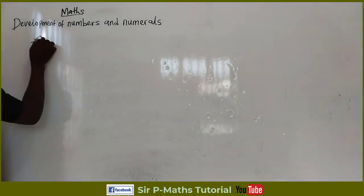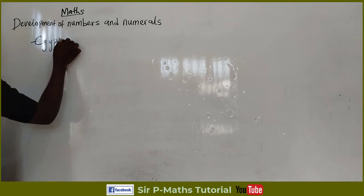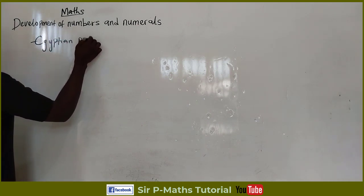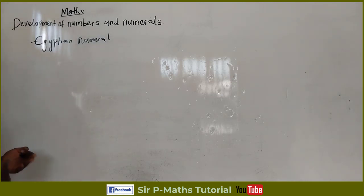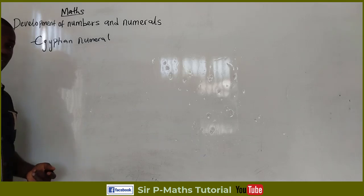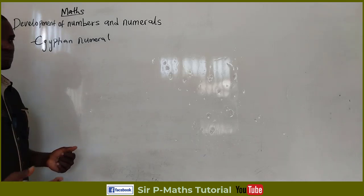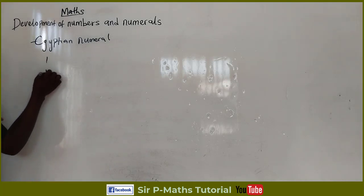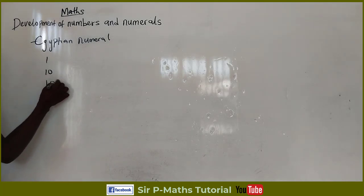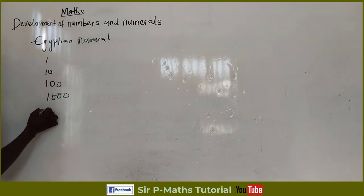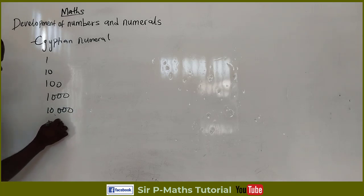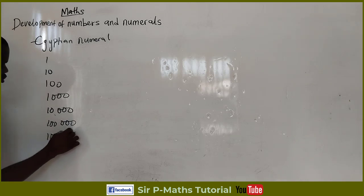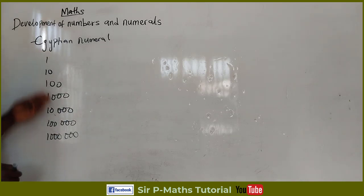First, we have the Egyptian numeral symbols. The Egyptians developed about seven symbols which helped them count numbers from one to one million. They used a place value system, with symbols for one, ten, one hundred, one thousand, tens of thousands, hundreds of thousands, and finally one million.